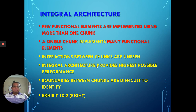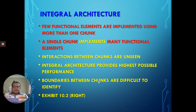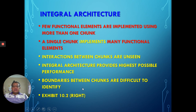Because it is integrated into the product, the interaction between chunks cannot be seen from outside externally. Integral architecture can provide better performance because it is already assembled as an integrated unit — functions perform more efficiently, like a built-in single product, but internally there are a few parts that have been integrated together. The boundaries between chunks are difficult to identify. In the textbook, Exhibit 10.2 on the right side shows integral architecture.